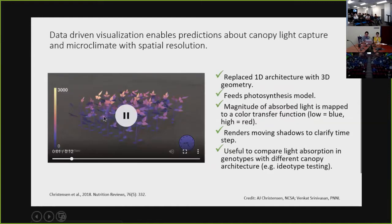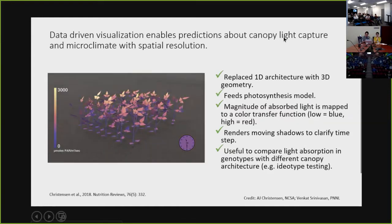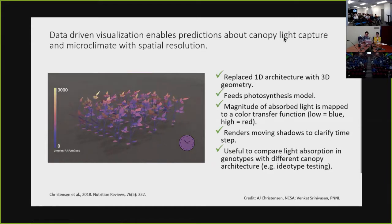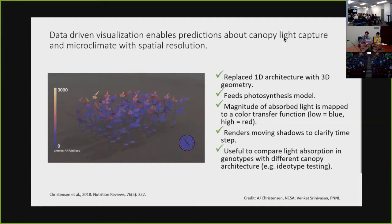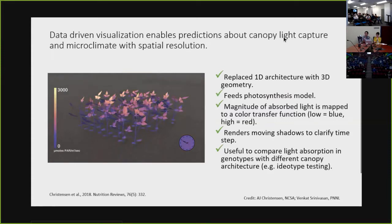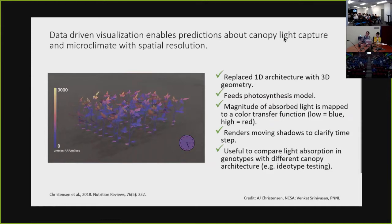This feeds our photosynthesis model, and then we can construct both data-driven results from this, but also data-driven visualizations. And so for instance, this visualization that you're seeing right now is the magnitude of the absorbed light mapped to a color map. Low absorbed light is at blue and high is at red. And we can even do things like render moving shadows in order to clarify the time step. Providing additional visual cues that help guide researchers understanding and guide our interpretation of visualizations can increase our ability to interpret, contextualize and understand them.